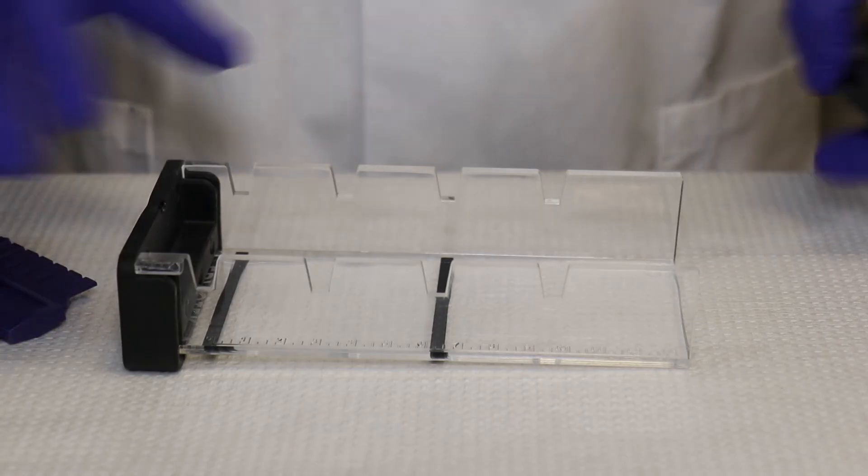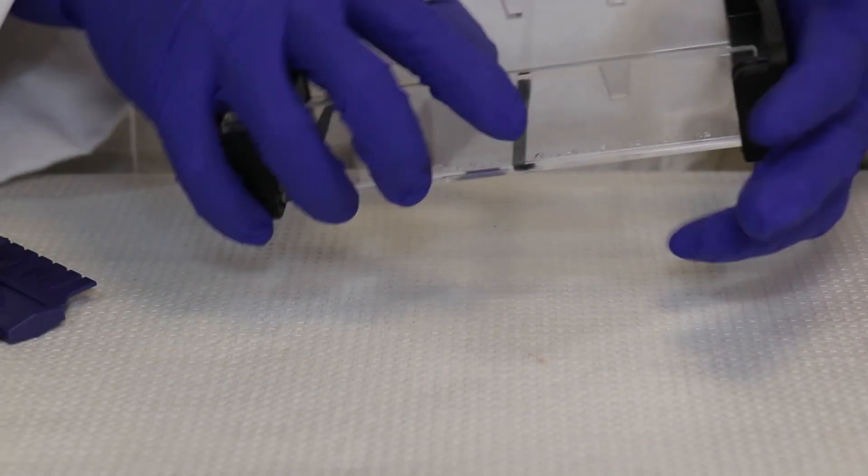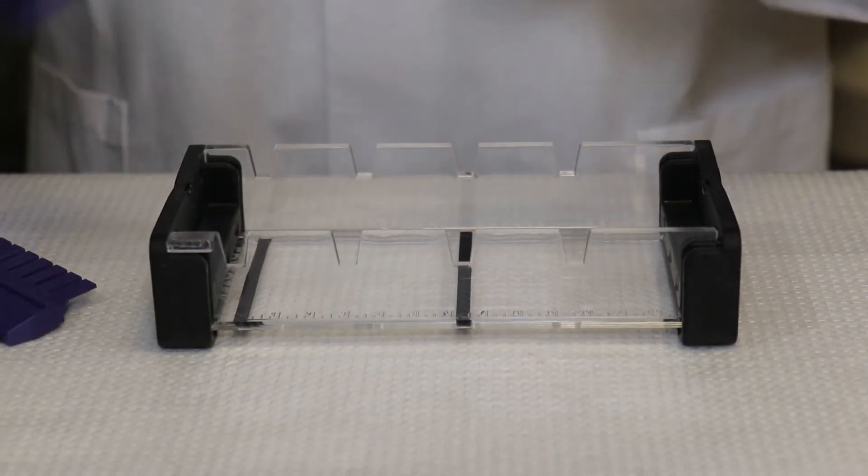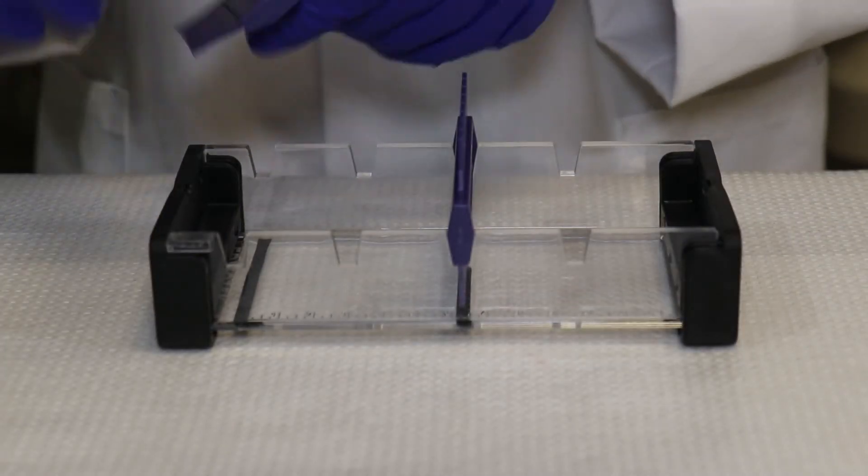Step 4: While the agarose is cooling, seal the ends of the gel casting tray with the rubber end caps. Place the comb in the appropriate notch.